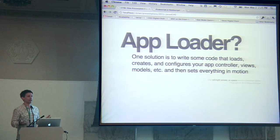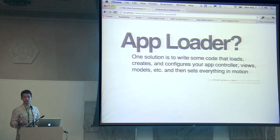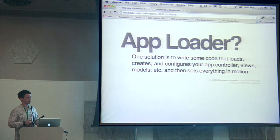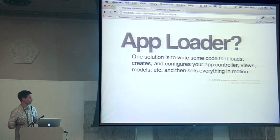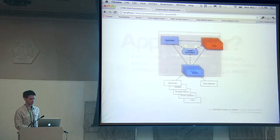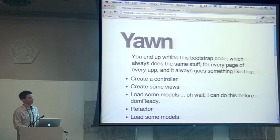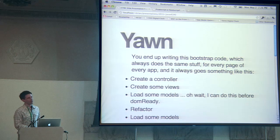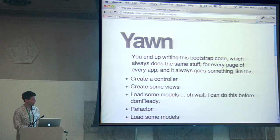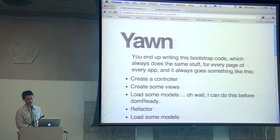One thing you can do — and you've probably done this — is write some piece of code that you load via whatever mechanism, and it does all of that for you. You write programmatic code to new your controller, new your views, hand them to the controller, new your models, do all of that stuff, set everything up, set it all in motion. And then your code looks like this and everything's good.